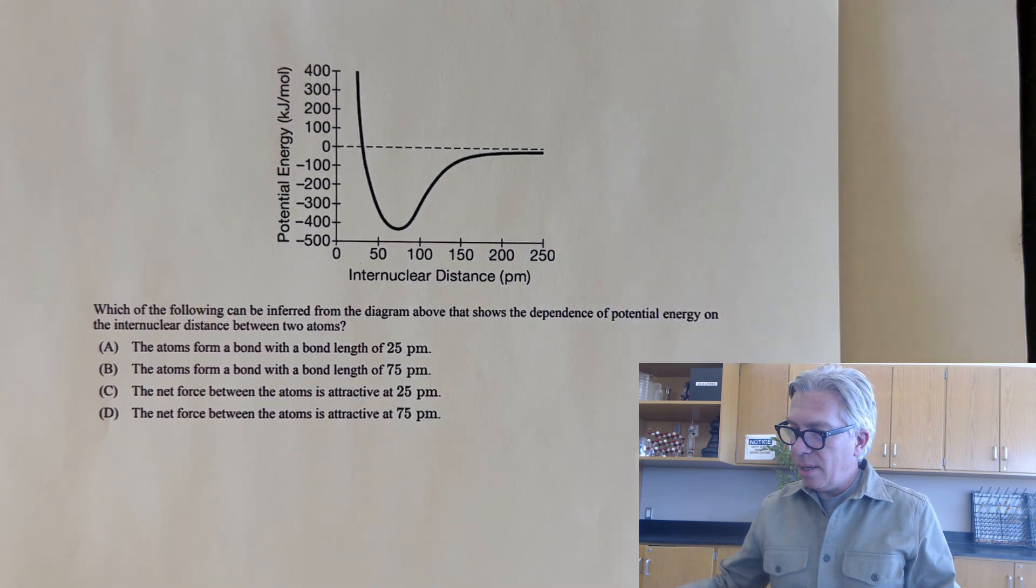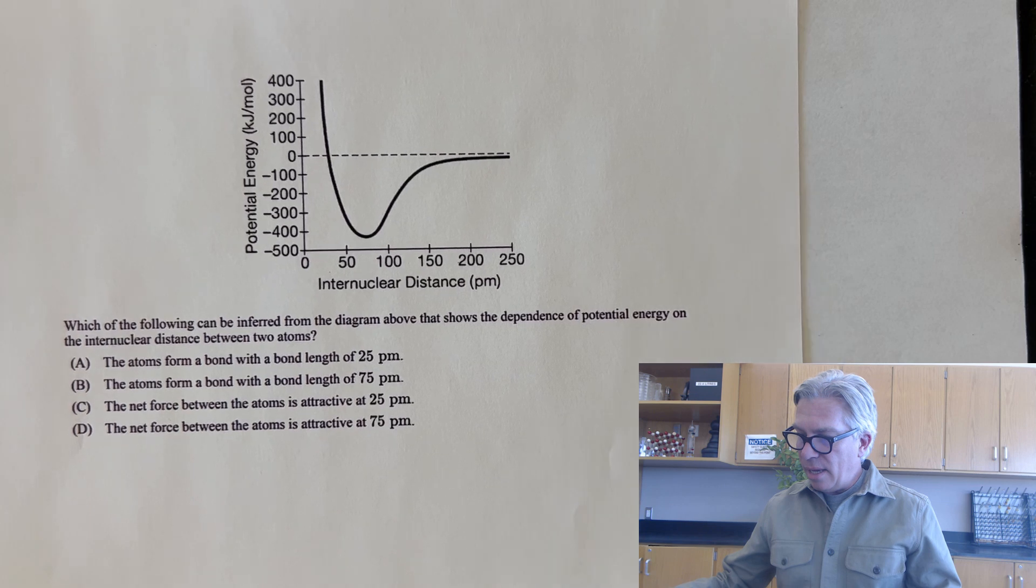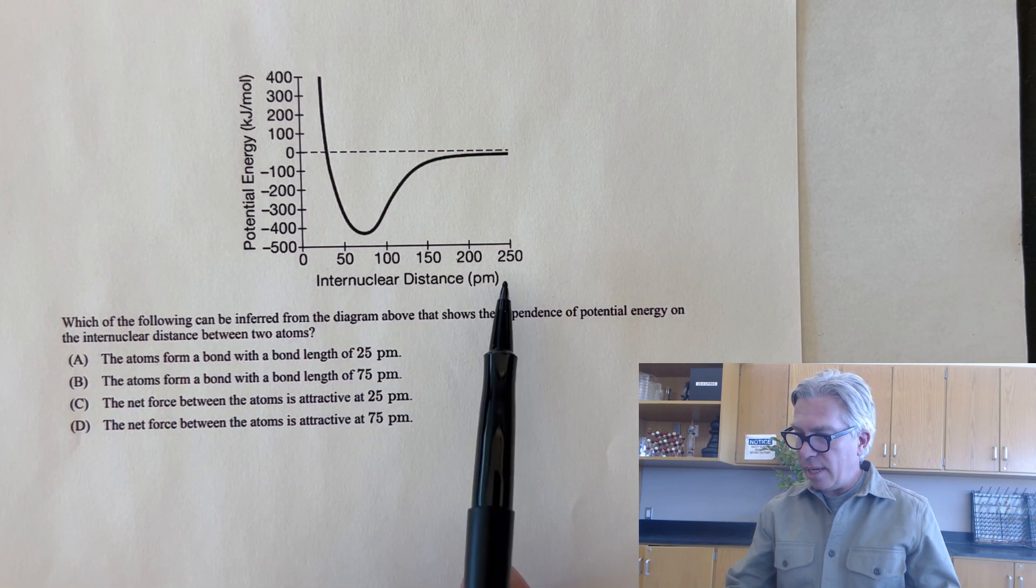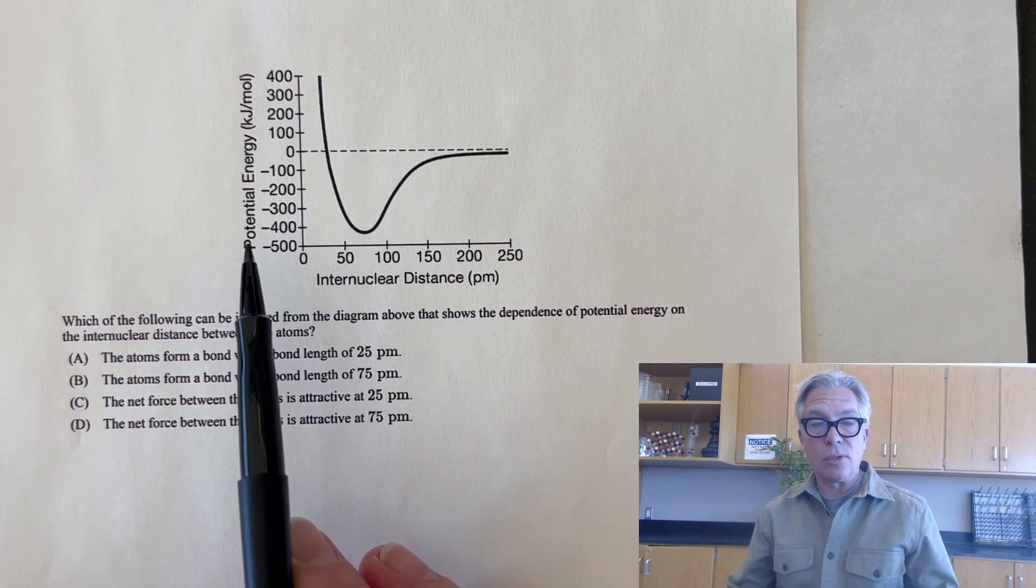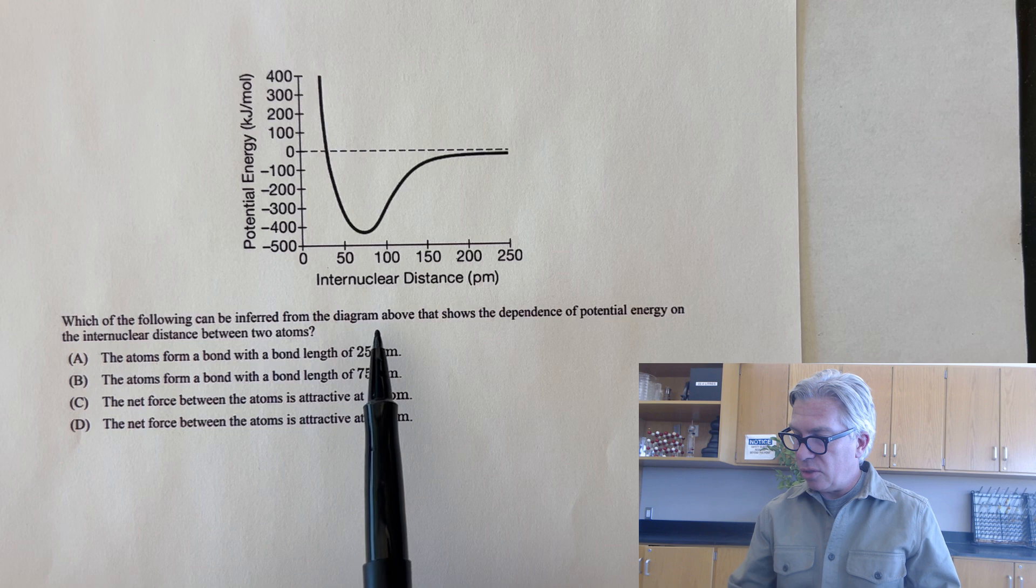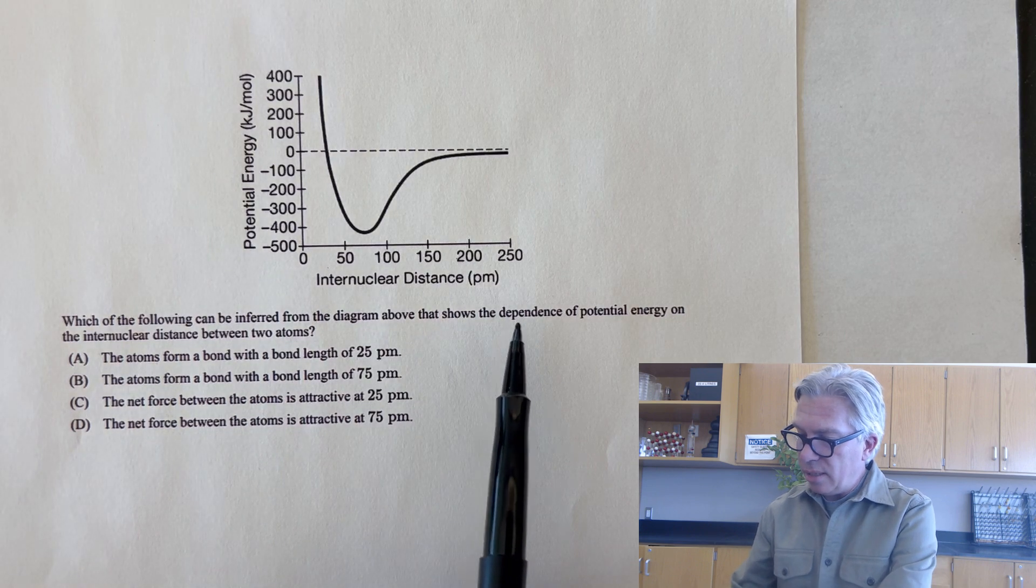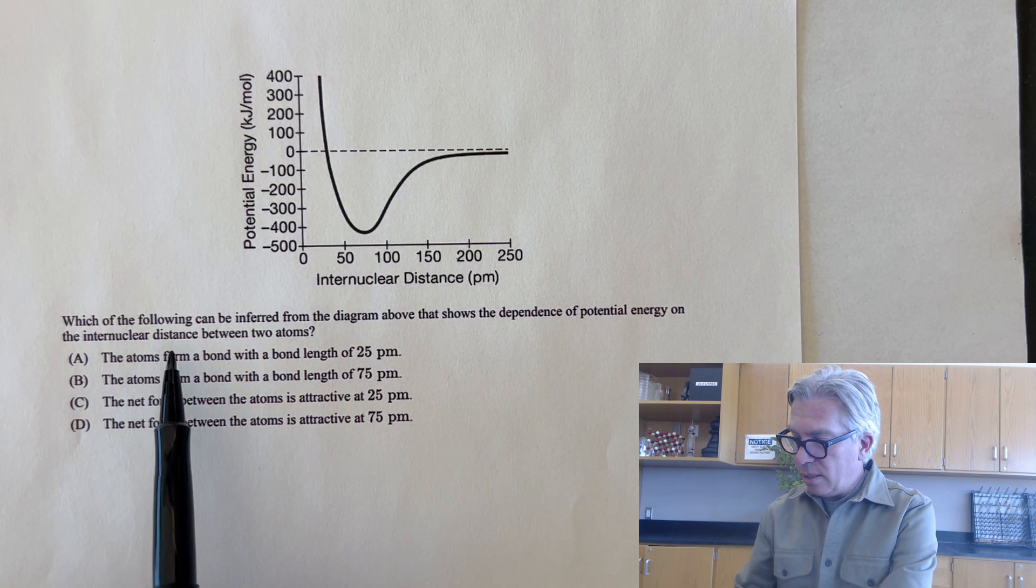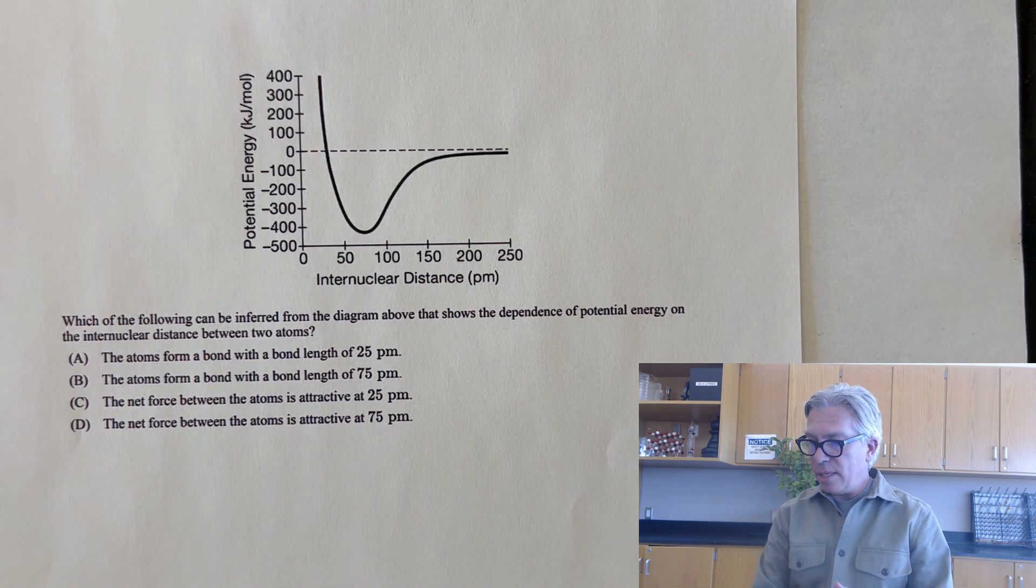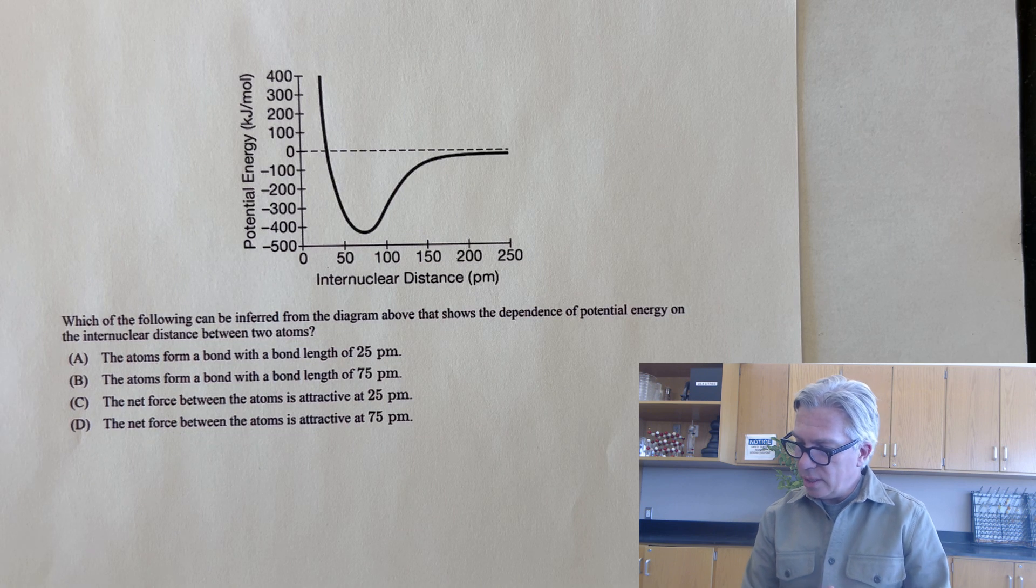One more multiple choice question. Again, you see the same similar diagram. This one actually has numbers on it down here and potential energy in kilojoules per mole over here. Which of the following can be inferred from the diagram above that shows the dependence of potential energy on the intranuclear distance between two atoms? Take a moment, pause the video again, and see if you can make the correct choice.